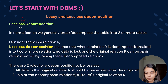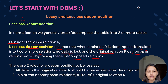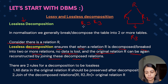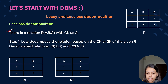In lossless decomposition, when a relation R is decomposed into two or more relations, no data is lost — the original relation R can be reconstructed by joining the decomposed relations. If R is decomposed into R1 and R2 and we perform a natural join to get R3, the data in R equals the data in R3. The data is preserved and we get the original table back. There are two rules: first, all data in the original relation R is preserved after decomposition; second, the join of decomposed relations equals the original relation.